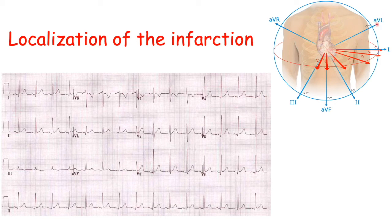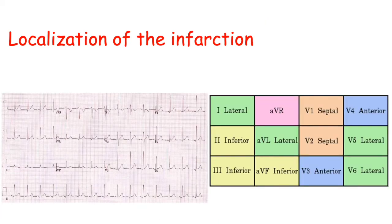Leads AVL and 1 show more the lateral side of the heart. Then V1, V2, V3, V4, V5, and V6 show from an anterior portion going toward a lateral portion of the heart. So this is how an ECG is divided: leads 1, 2, 3, AVR, AVL, AVF, and then V1 to V6. Below we usually have a reference lead, which tends to be lead 2.